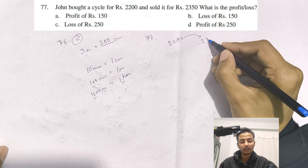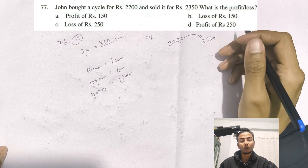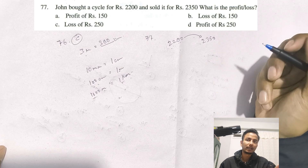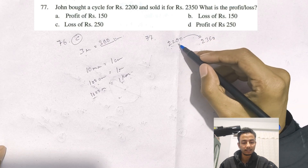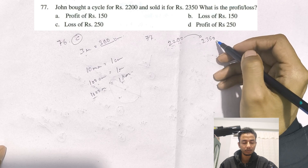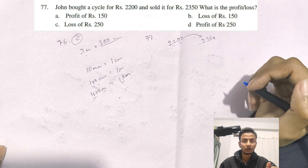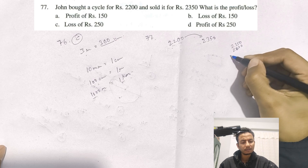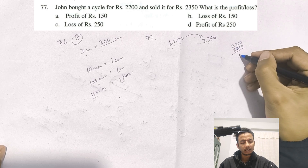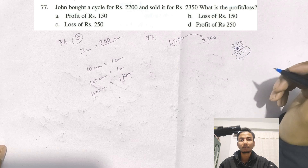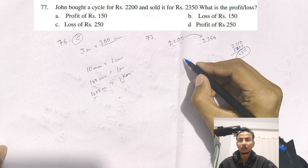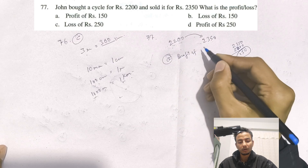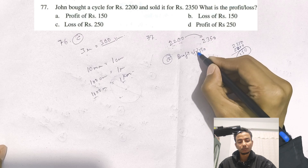Profit is selling price minus cost price. So the profit is Rs. 2350 minus Rs. 2200, which equals a profit of Rs. 150.